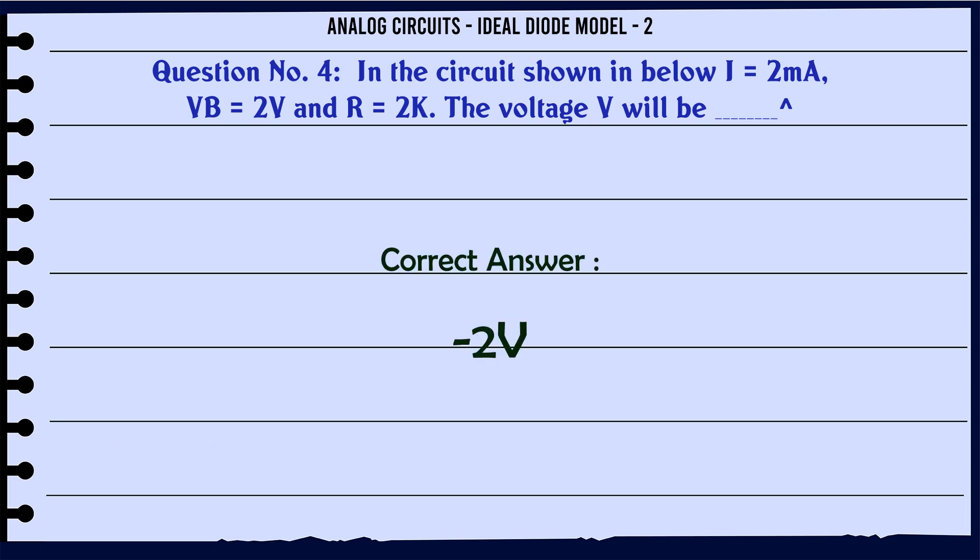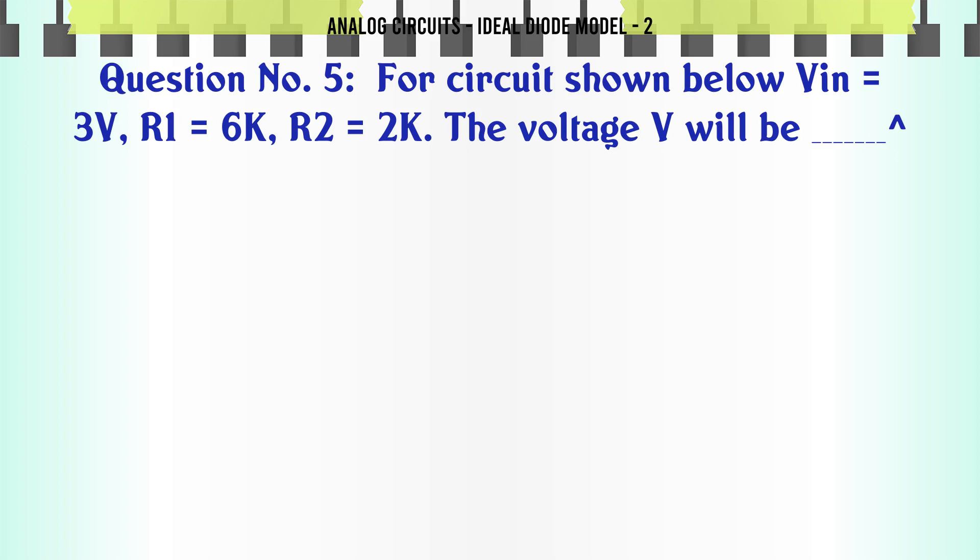For the circuit shown below with I = 3A, R1 = 6K, R2 = 2K, the voltage V will be: A) 3V, B) 0.75V, C) 1V, D) 1.134V. The correct answer is 3V.